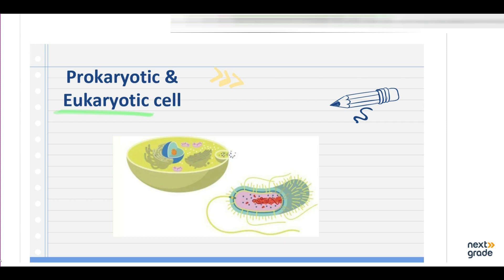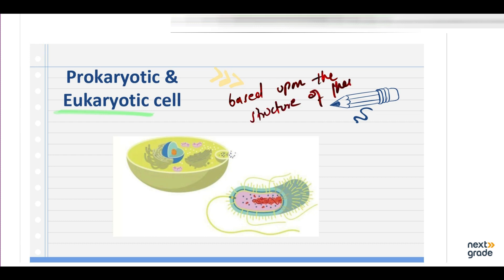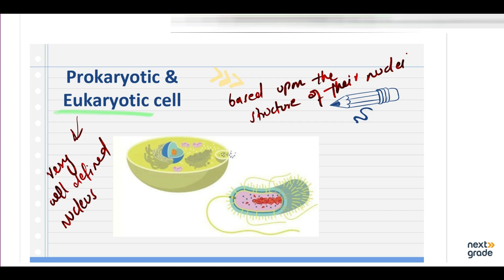Biologists have divided cells into two types: prokaryotic and eukaryotic. The differences are based upon the structure of their nuclei. Eukaryotes include plants and animals and all the unicellular or multicellular organisms like fungi and protista. They contain a very well-defined nucleus in which the nuclear material, chromosome or DNA, is enclosed in a double membrane.